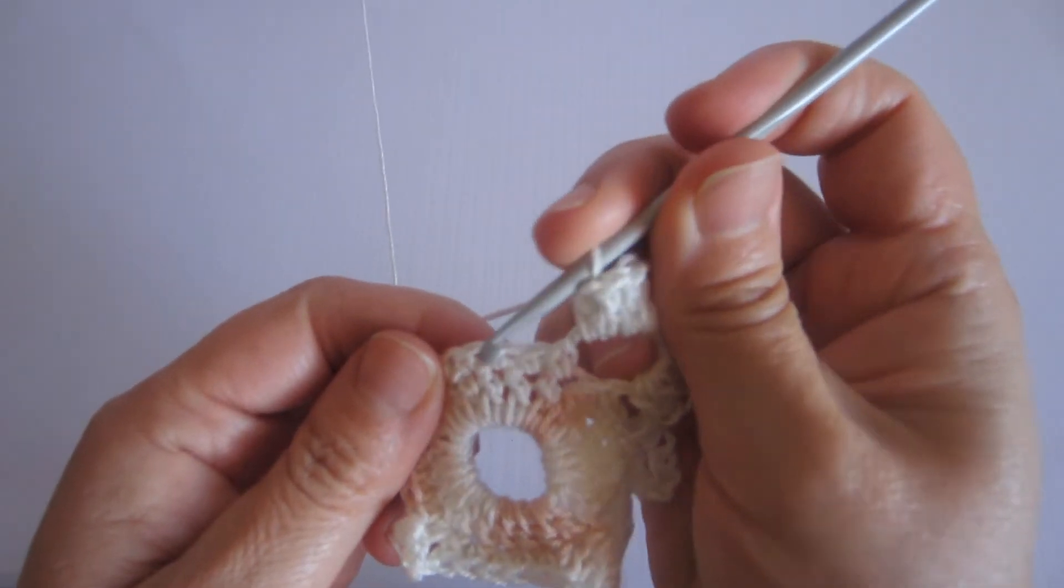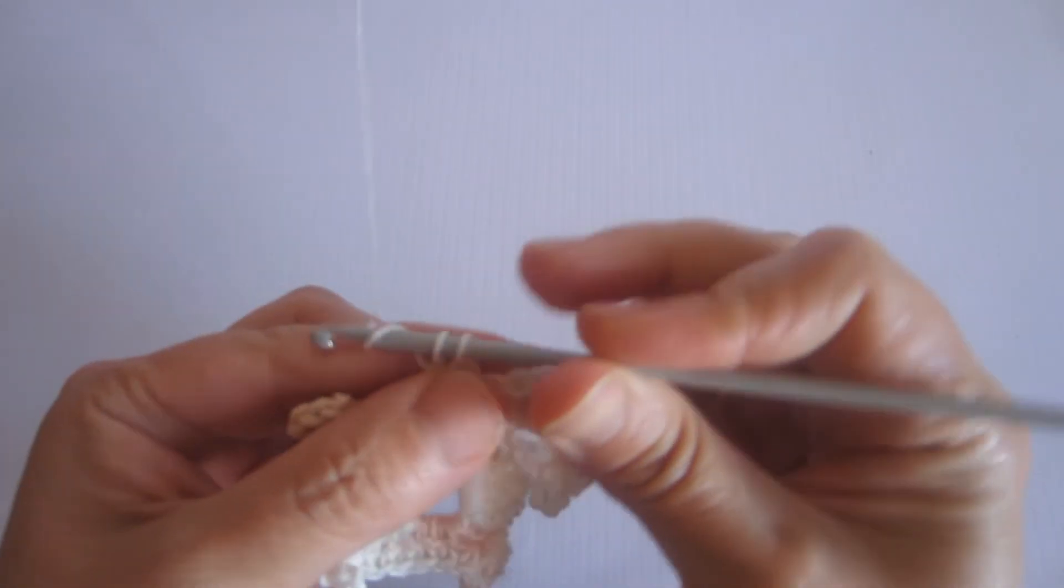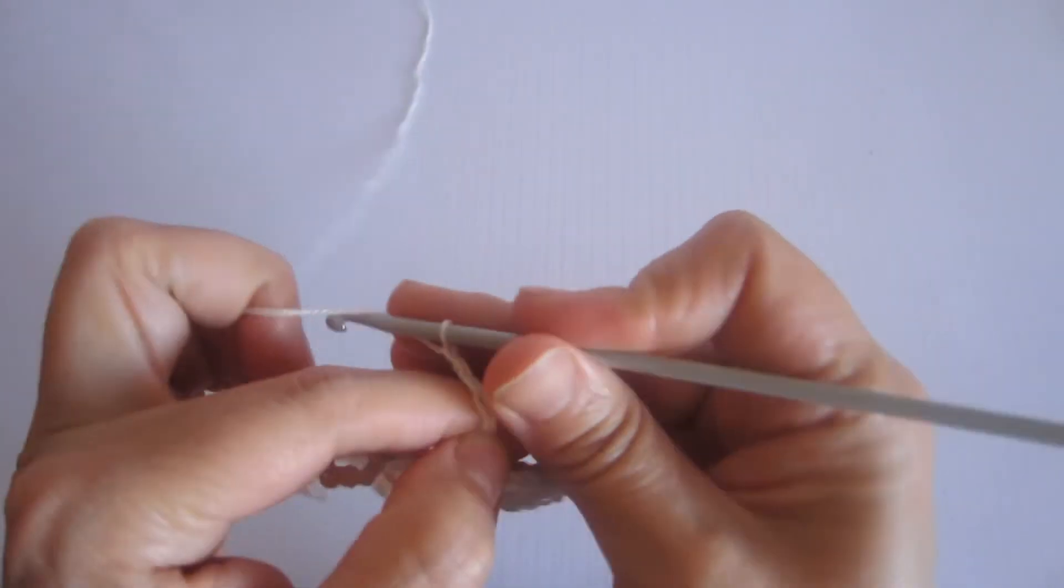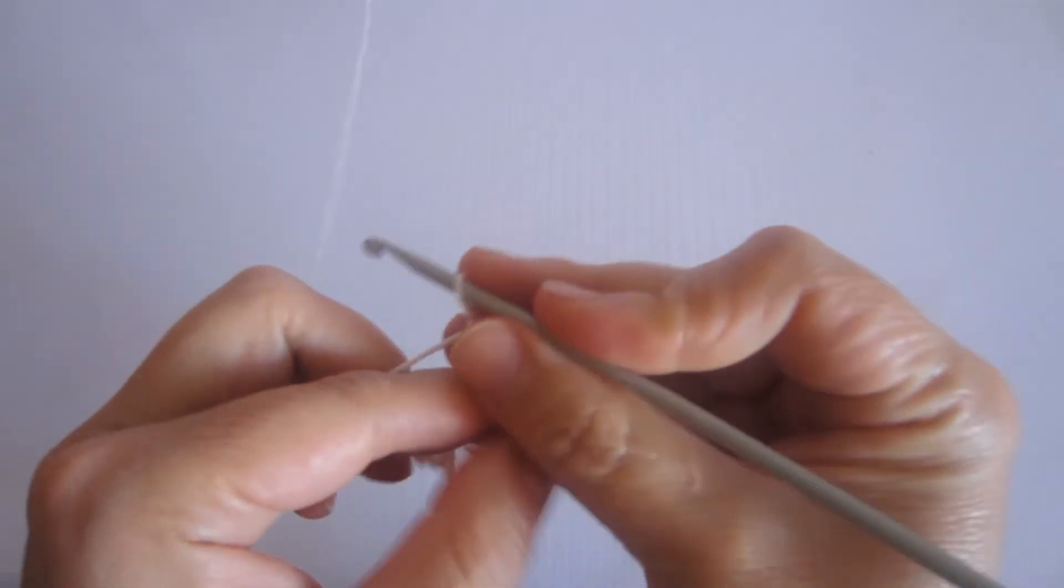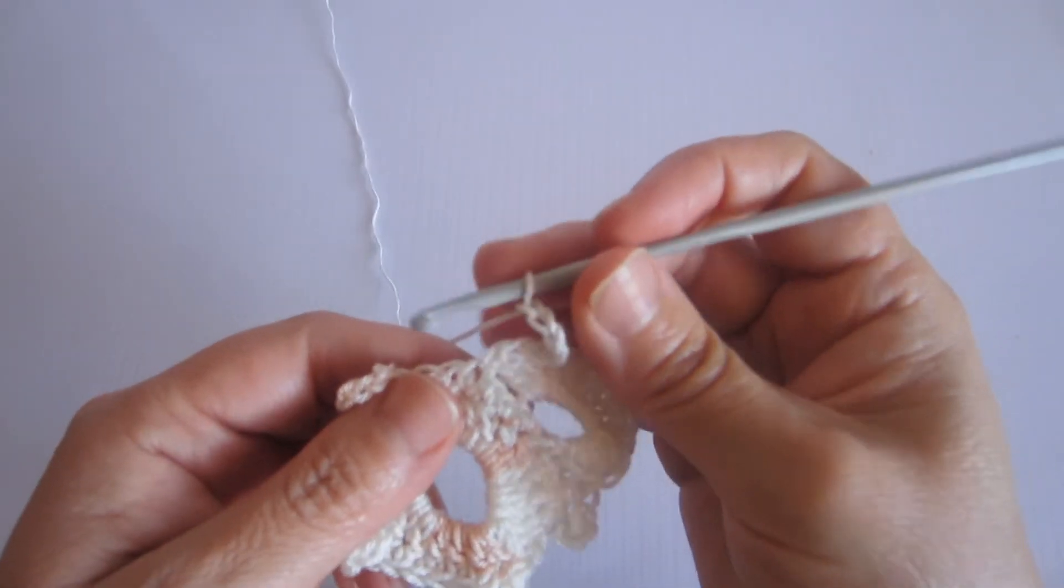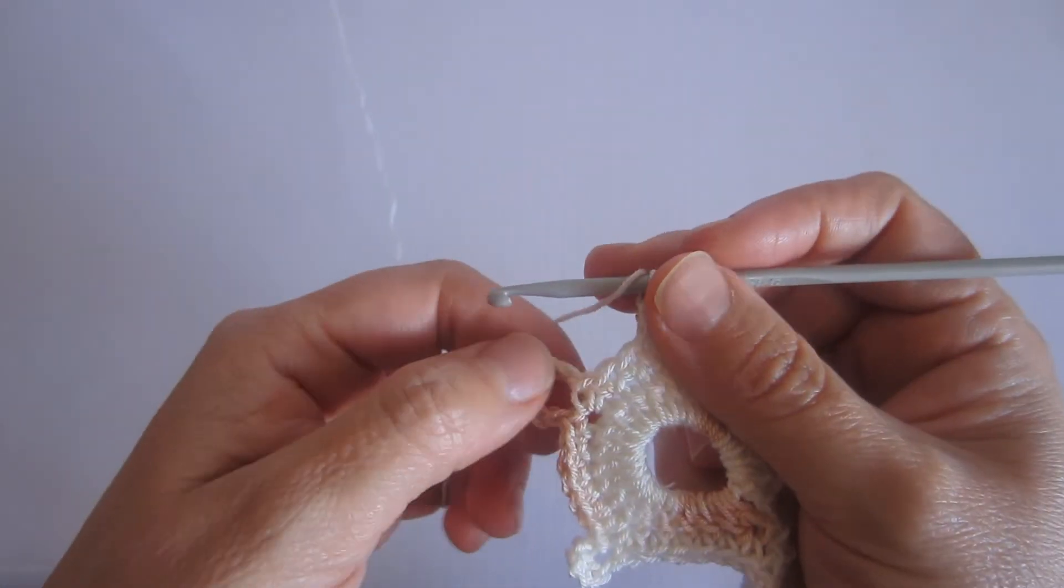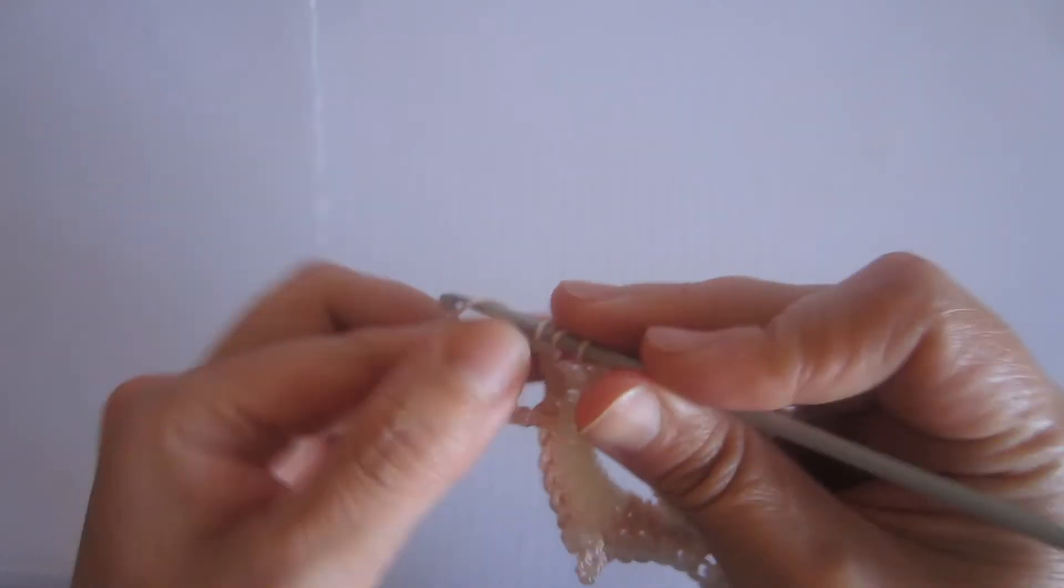Y cuento 1, 2, 3. Tejo medio punto y 7 cadenitas. En el mismo espacio vuelvo a tejer medio punto. Luego en el espacio siguiente tejo 6 puntos altos.